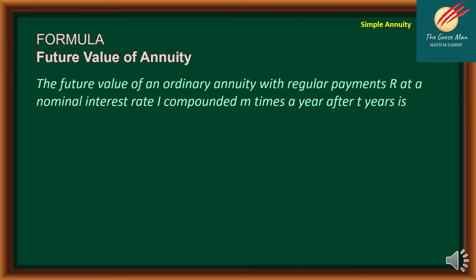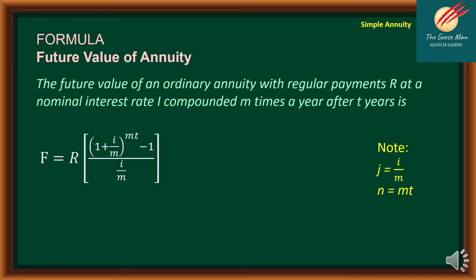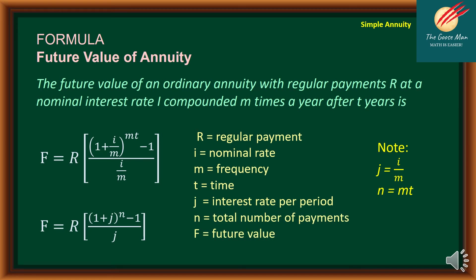As observed, constructing the cash flow is quite laborious. So we will now use the future value formula for an ordinary annuity. With regular payment R at nominal interest rate I compounded M times a year after T years: F = R × [(1 + I/M)^(MT) − 1] / (I/M). Note that J = I/M and N = MT, where R is the regular payment, I is the nominal rate, M is the frequency, T is the time, J is the interest rate per period, N is the total number of payments, and F is the future value.